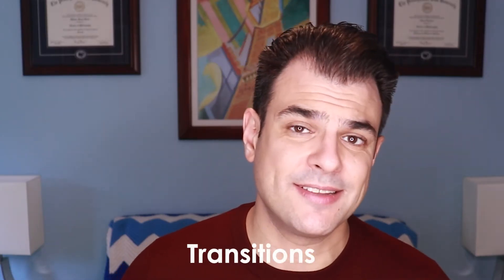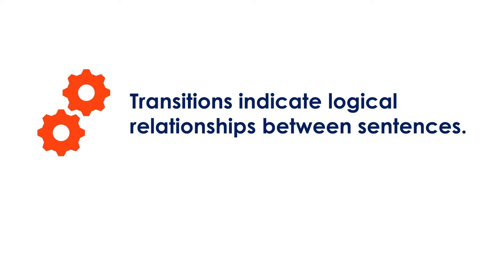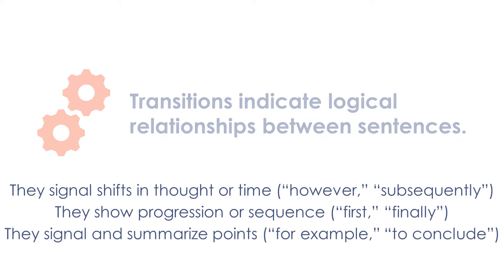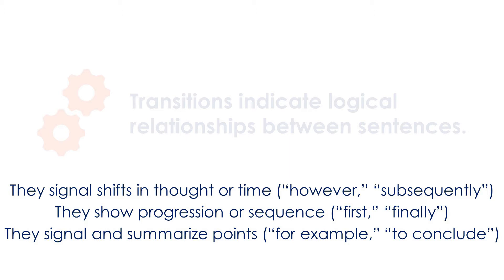So let's start out by discussing transitions in greater depth. Transitions are words or phrases that you can use to indicate logical relationships between sentences. There are a wide variety of transitions at your disposal. You can use transitions to signal shifts in thought or in time, as with words like 'however' or 'subsequently.' You can use transitions to show progression or sequence, as with words like 'first' or 'finally.' And you can use transitions to signal and summarize points, as with words or phrases like 'for example' or 'to conclude.'